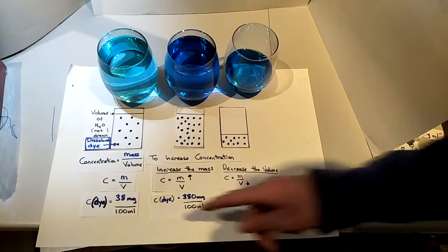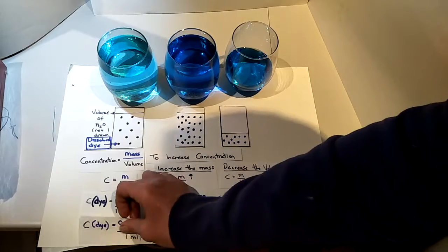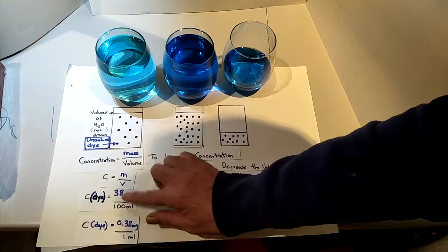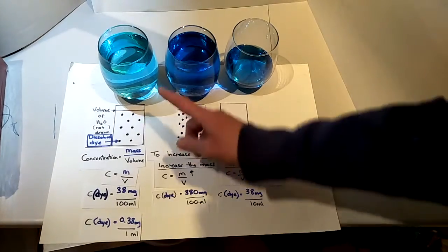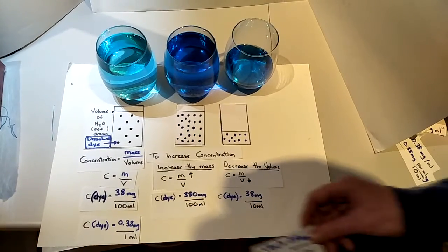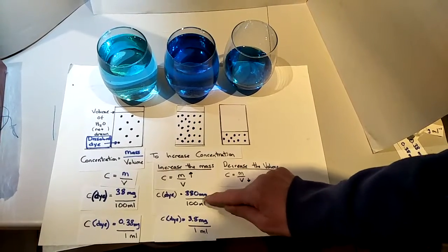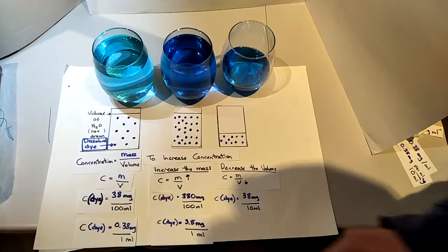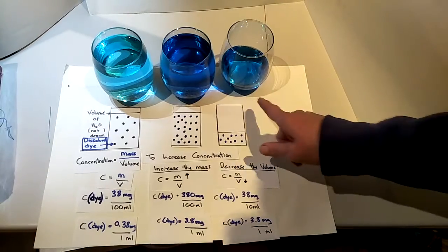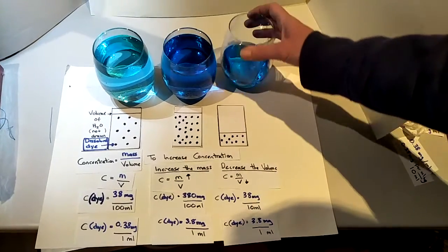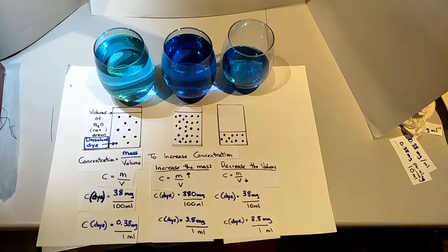If we remember, we can divide this by this to make it the mass in a mil. So we've got 0.38 milligrams per 1 mil, which is what we had at the beginning. So if I divide that, we can see we've got 3.8 milligrams, and this one is also 3.8 milligrams per mil. So these two are the same concentration, but two ways of getting a higher concentration.